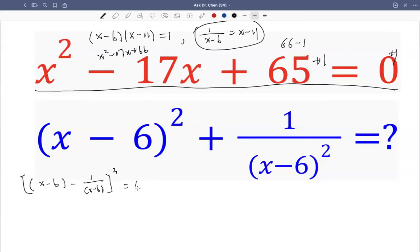Square of this would be x minus 6 squared minus 2 times x minus 6 times 1 over x minus 6, that's just minus 2, then plus 1 over x minus 6 squared.